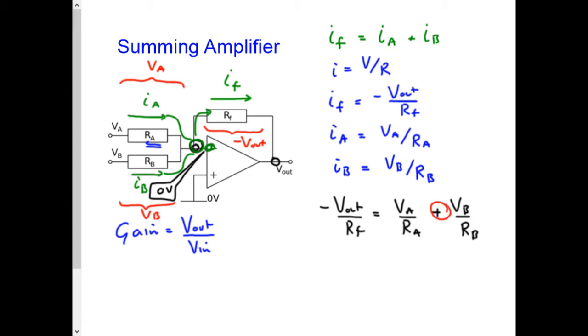This is the summing part. The input voltages are now added together, and the resistor values give me a gain.